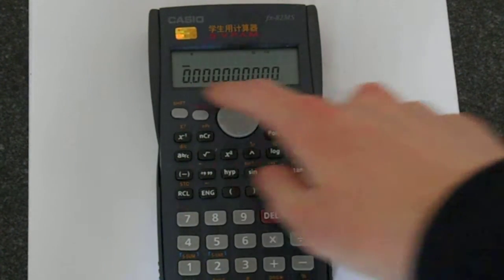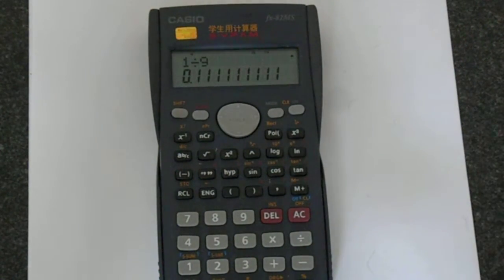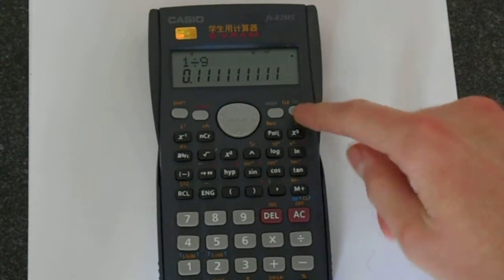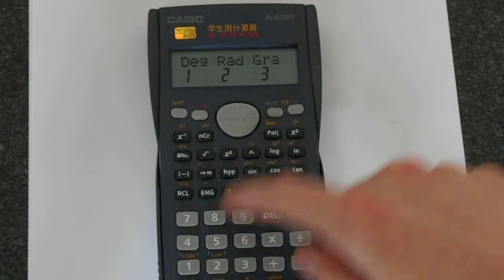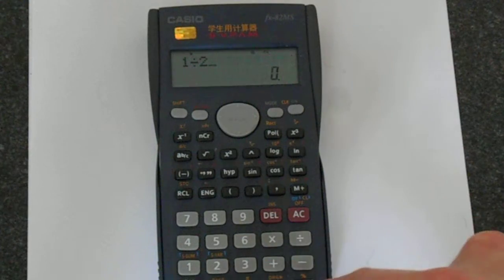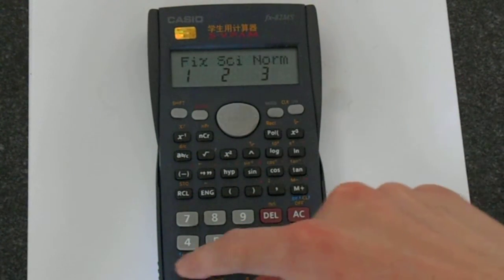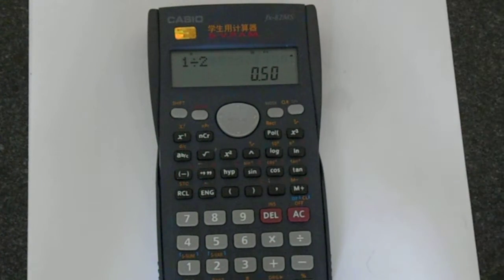Let's just put in 9, and then we can do calculations to 9 decimal places. Amusingly, if you put this to 0 and you do something like 1 divided by 2, you get the answer 1. But then if you set it back to, say, 2, you get something that's more reasonable.